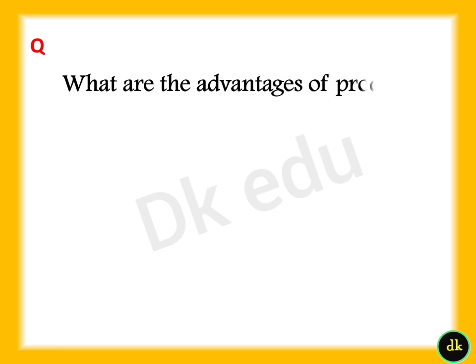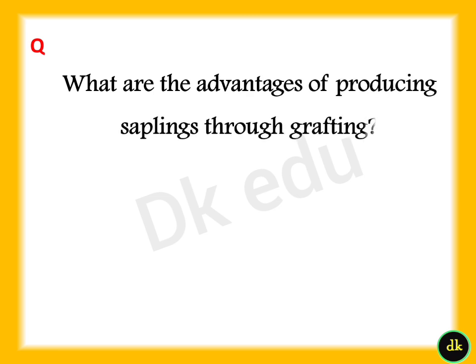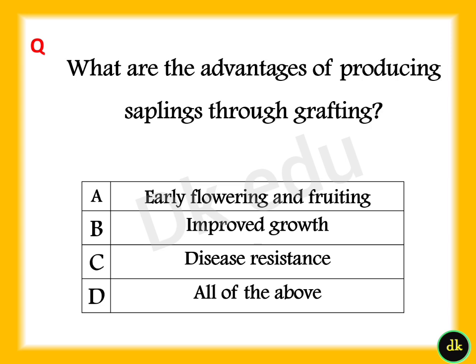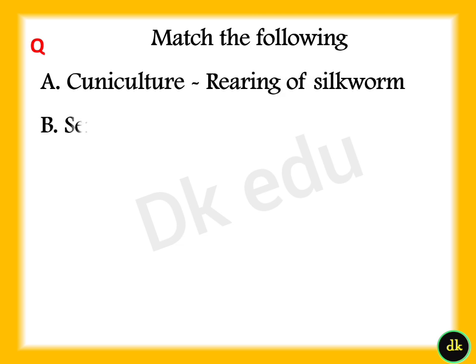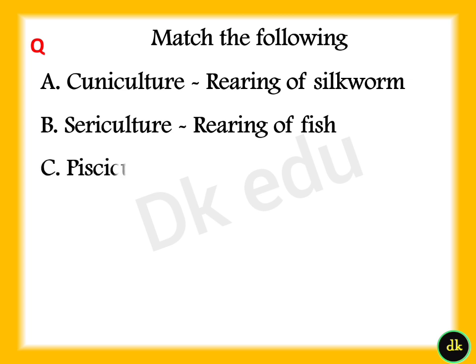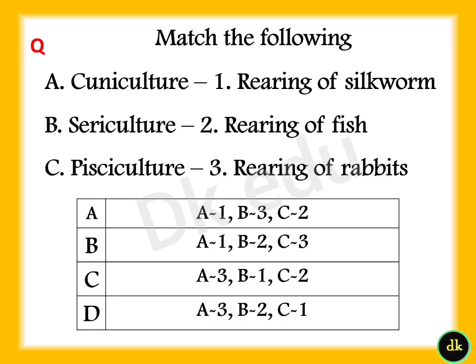What are the advantages of producing saplings through grafting? Answer: Option D, All of the above. Match the following — Cunny culture: rearing of rabbits; Seri culture: rearing of silkworm; Pisciculture: rearing of fish.